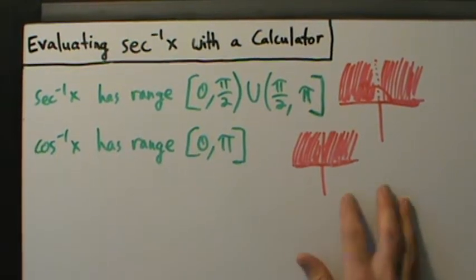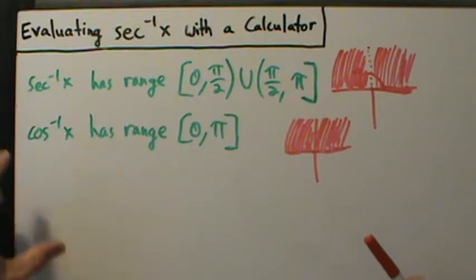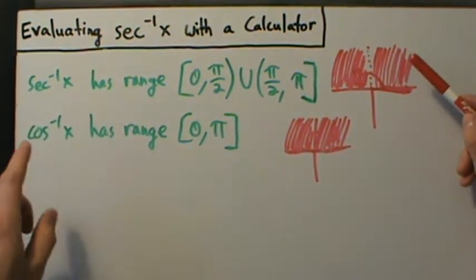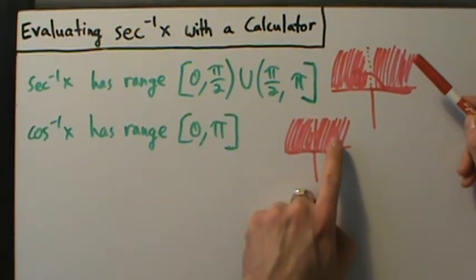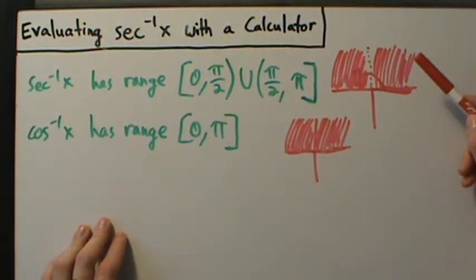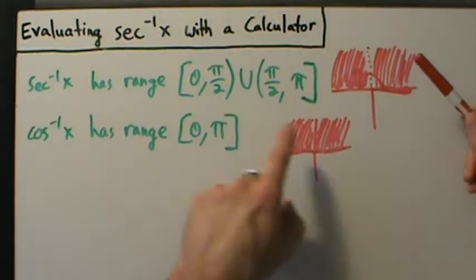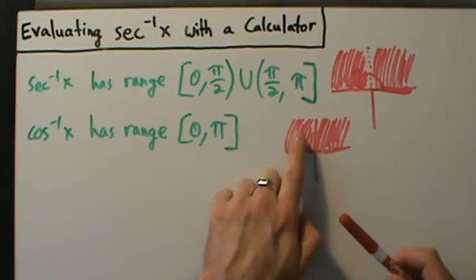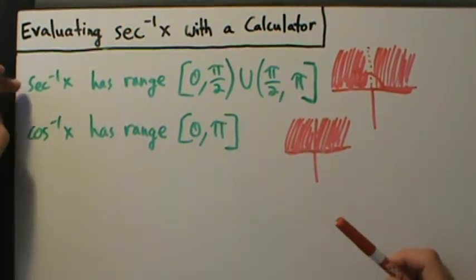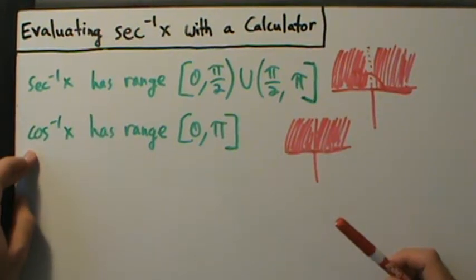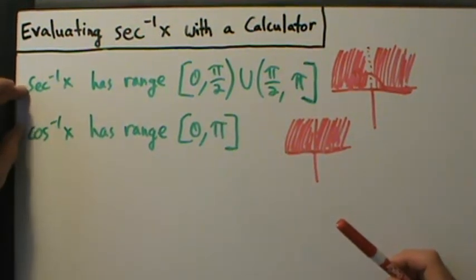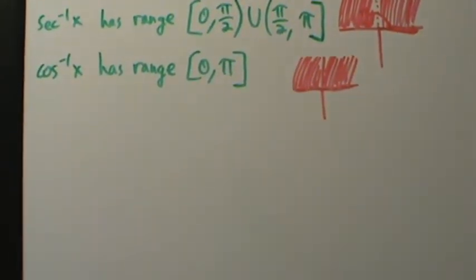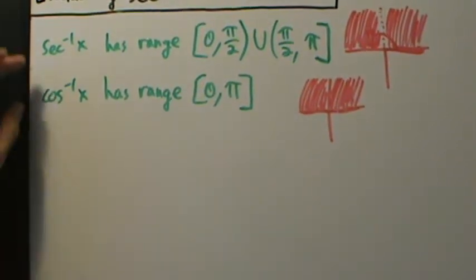One key thing to point out: if the inverse secant of x is in the first quadrant, then the inverse cosine of x is also in the first quadrant. Similarly, if the inverse secant of x is in the second quadrant, then the inverse cosine of x is also in the second quadrant. In other words, inverse secant of x and inverse cosine of x are always either both in quadrant 1 or both in quadrant 2. That's a really nice property we can use.